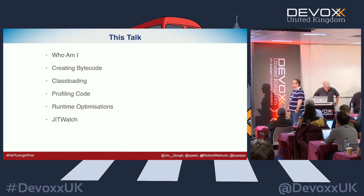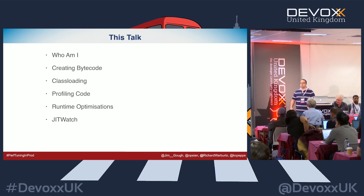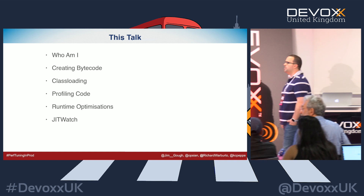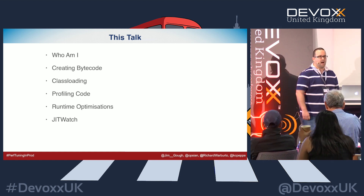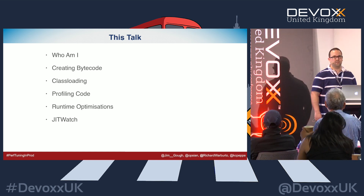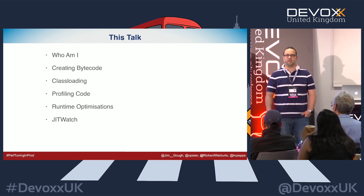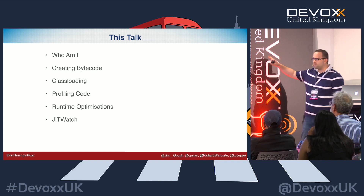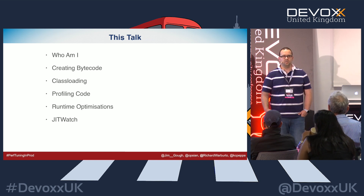In this talk we're going to cover a few different things: who I am, a little bit on bytecode and how bytecode works, class loading and how the class loading mechanics operate — including an example you can play around with afterwards. We'll talk about interpreting and profiling code, where a lot of the magic in the JVM happens, and look at some runtime optimizations. Then we'll look at JITwatch, which makes it easy to explore what the JVM is actually doing.